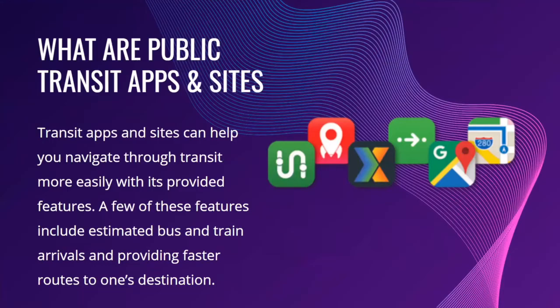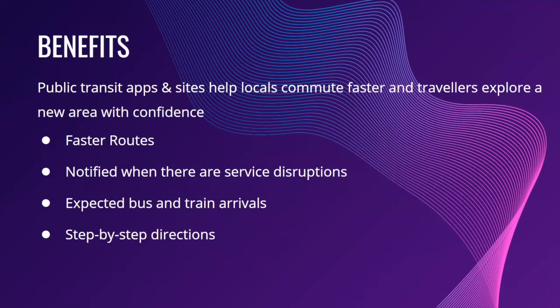So what are public transit apps and sites? These are applications and websites that can help you navigate public transportation more easily with their features. Some of the features included are estimated bus and train arrival times, which also help you get faster routes to your destination. Some of the benefits of using public transit apps and sites are that they can help locals commute faster and they can also help travelers navigate a new city.